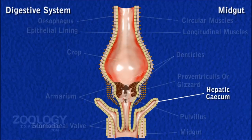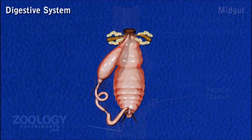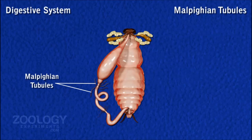The hepatic ceca are internally lined by epithelium and secrete digestive enzymes. Malpighian Tubules. From the junction of the mid-gut and hindgut, 80 to 150 very narrow, thread-like, yellow-colored blind tubules project freely into the haemocoel. These are called Malpighian tubules.